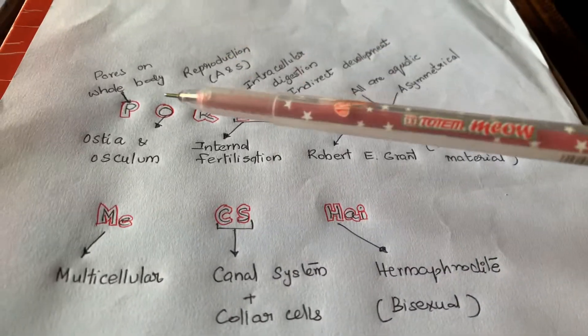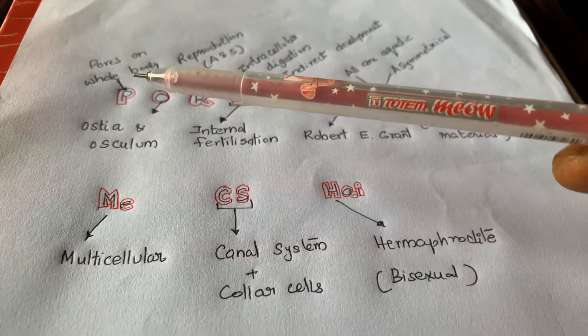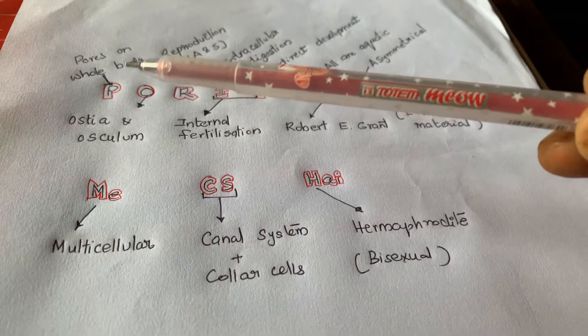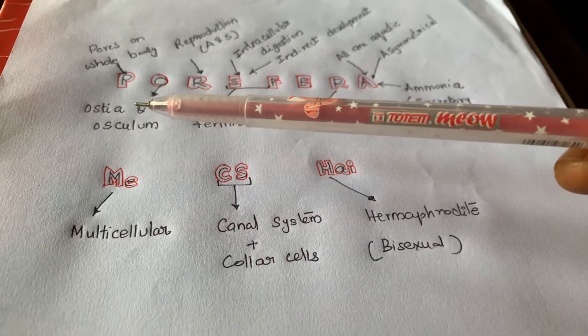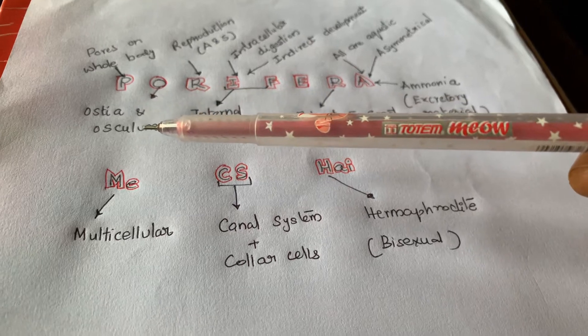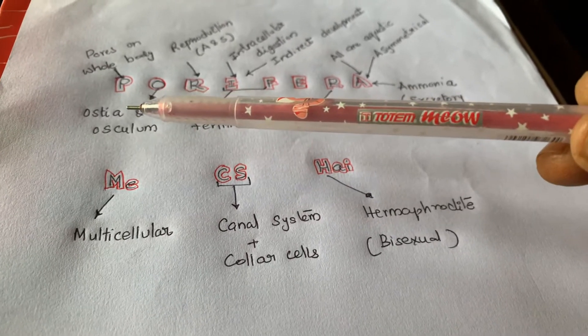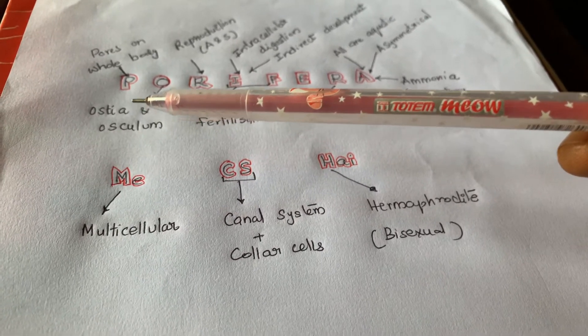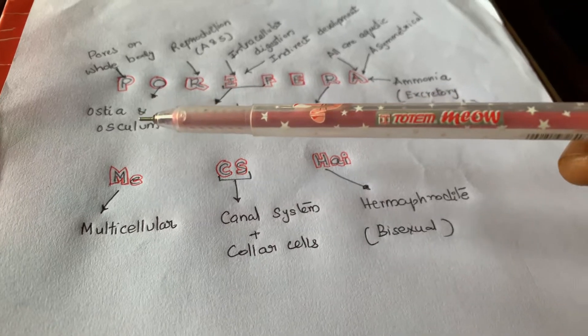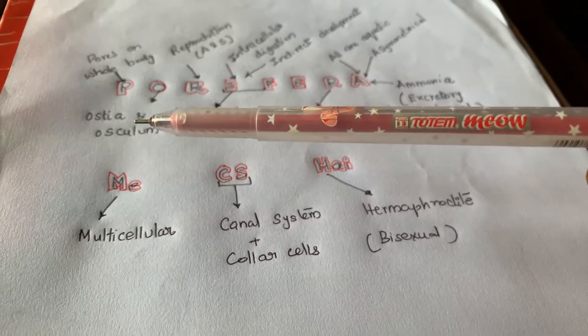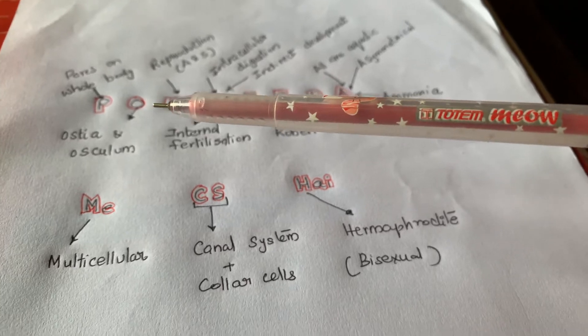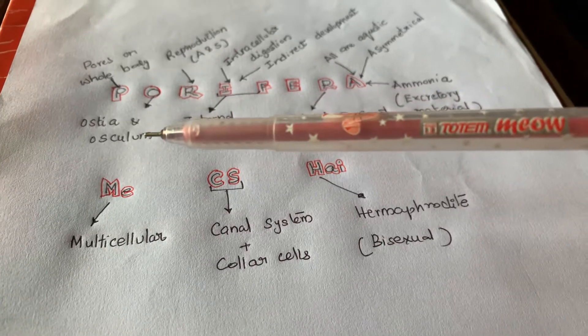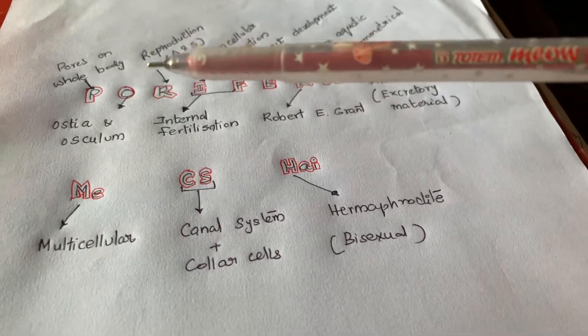If you take the P letter, you know very well the name itself indicates the presence of pores on their whole body called ostia. And at the apex, they will have osculum. The water enters through the ostia in current water system, and osculum is the outlet through which the water escapes from the body. That is about the P - pores, ostia and osculum.